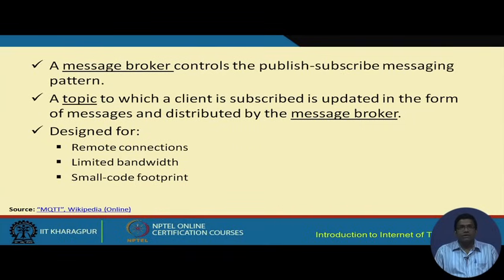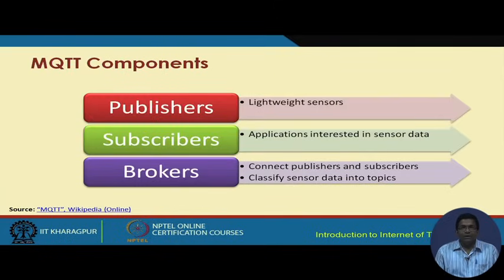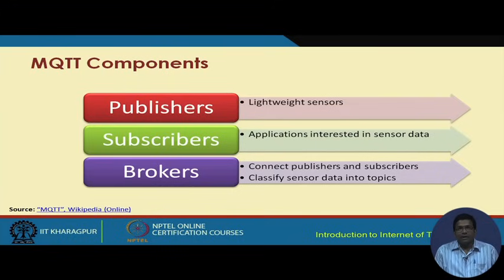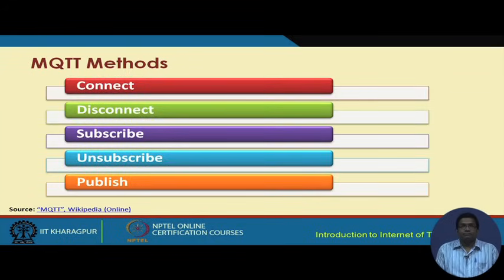MQTT is designed for remote connections and limited bandwidth environments. The advantage is that it provides a very small code footprint — by writing only a very small piece of code one is able to achieve all these different functions. The different components of MQTT are as follows: we have three principal components — the publishers, which involve the different sensors; the subscribers, meaning those entities and applications interested in the data published by the sensors; and the broker in between, which helps the publishers connect and also helps classify the sensor data into different topics.